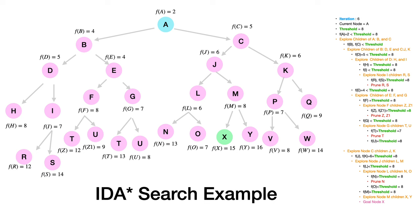When we reach node X, we have found the goal. So in IDA*, we are neither going deeper as in depth-first search, nor limited by a fixed depth value as in depth-limited search, nor using a fixed depth limit as in iterative deepening DFS. Instead, we use F(n) values to decide whether to pursue deeper or not.